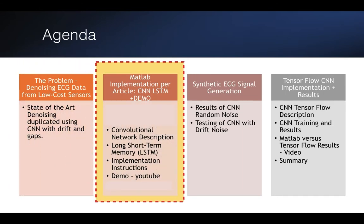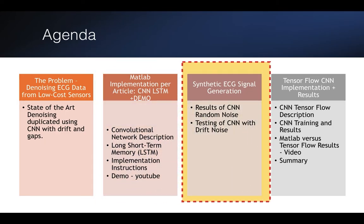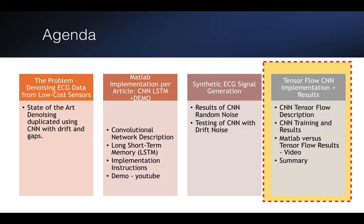The second part of the agenda is the MATLAB implementation using both CNN and LSTM comparing, plus a demo. The third part, which has quite a bit of information, covers synthetic ECG signal generation. It turns out that normal signals are not able to give you an accurate signal-to-noise ratio, so synthetic ECG signals had to be developed. The last part is TensorFlow doing a similar architecture to the original MATLAB that was presented in the article. These results will be compared with MATLAB and summarized.